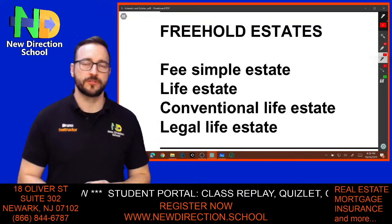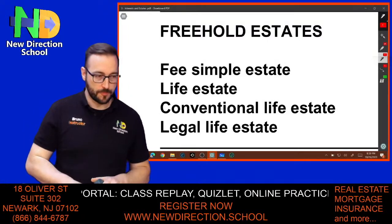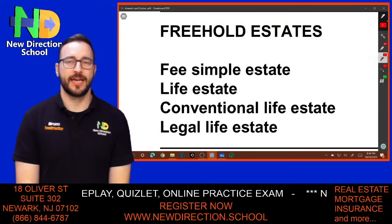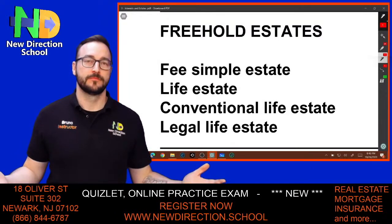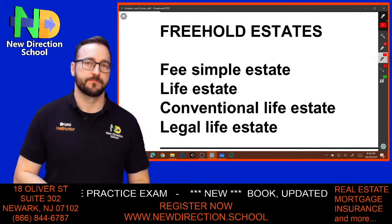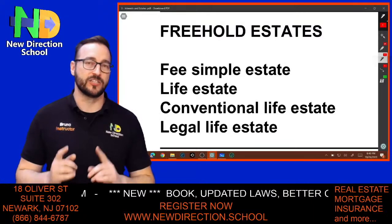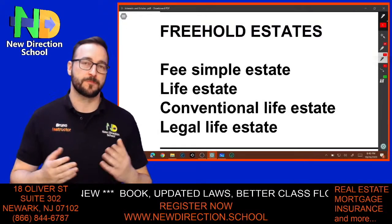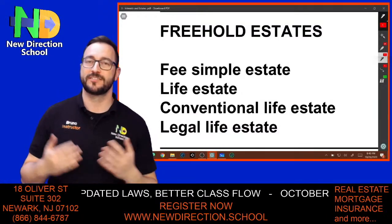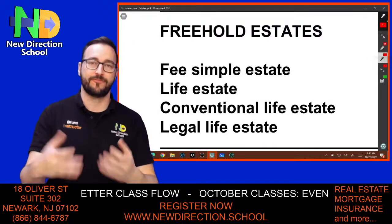Under freehold estates there are different types of ownership. There's the fee simple estate — as the word says, simple — you are the owner, period. Nobody can take it away; it's absolute ownership. There's also a life estate, which means you are the owner of the property as long as you're alive, or based on somebody else's life — you own it until that person dies.